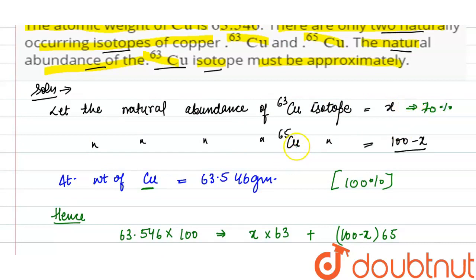Also, we can calculate the natural abundance of copper-65. It will be 100 minus 70, so it will come out to be 30%. So, our final answer is 70%.